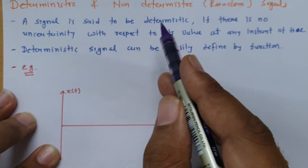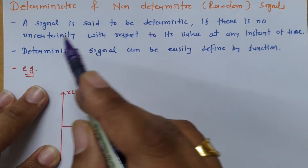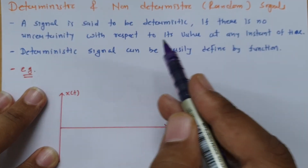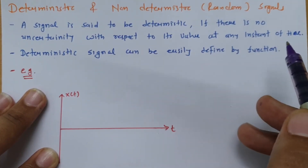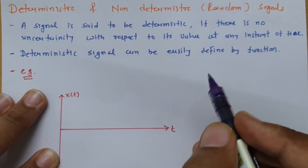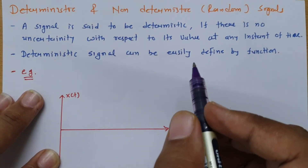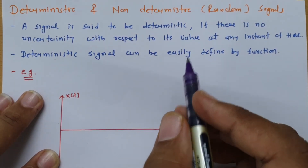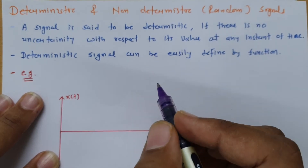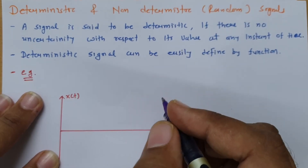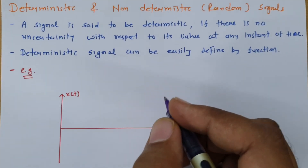A signal is said to be deterministic if there is no uncertainty with respect to its value at any instant of time. Whenever you have been given any signal which has no uncertainty, then one can say that the given signal is a deterministic one.